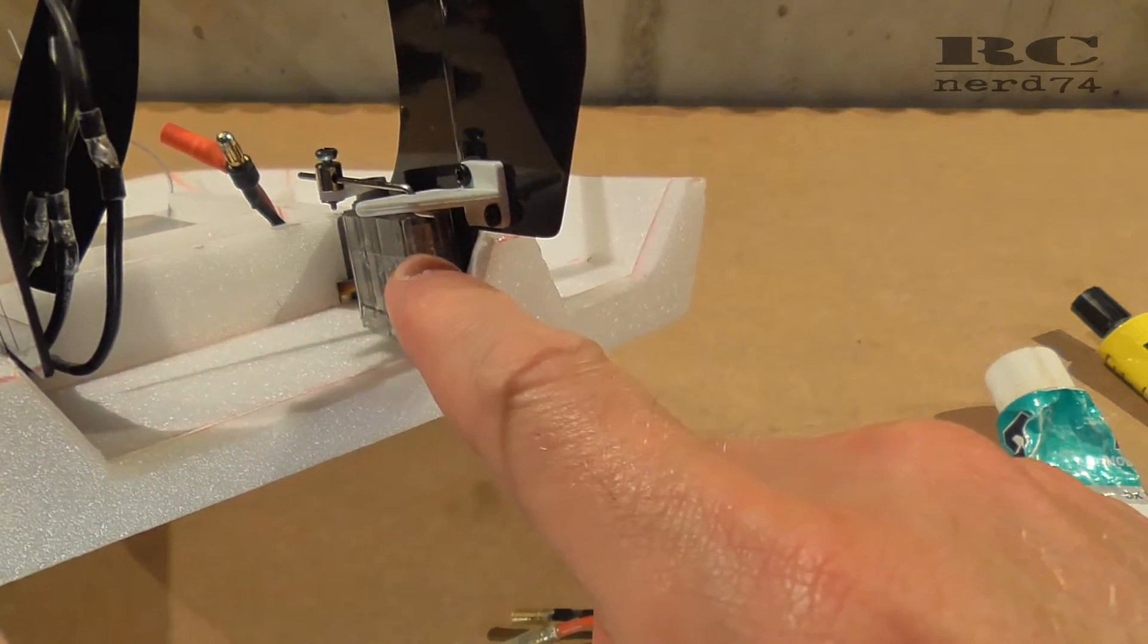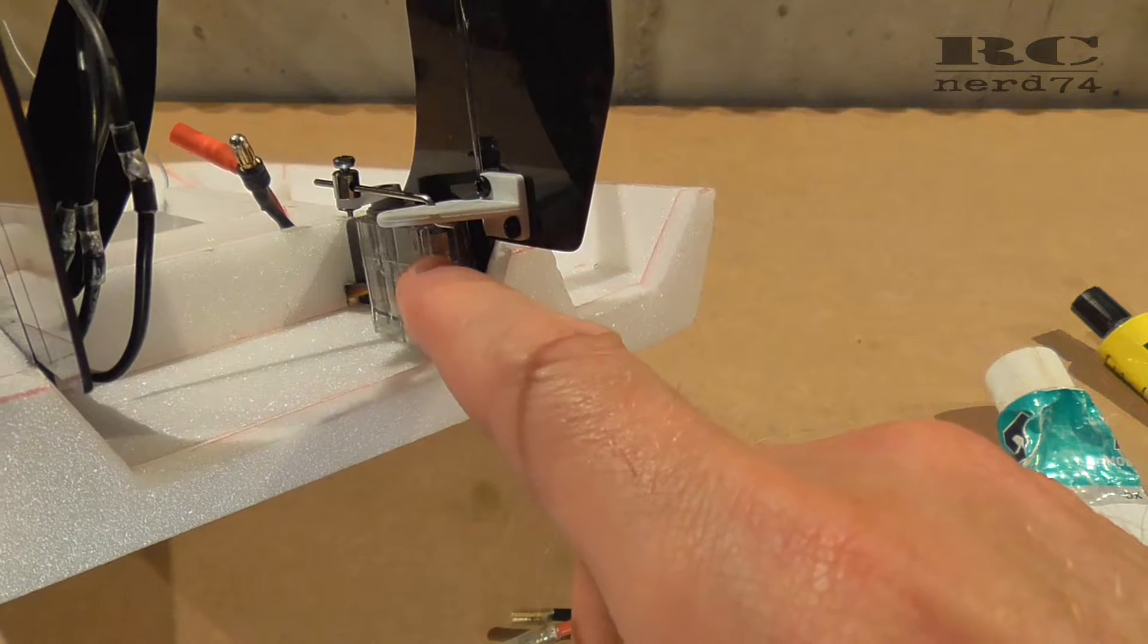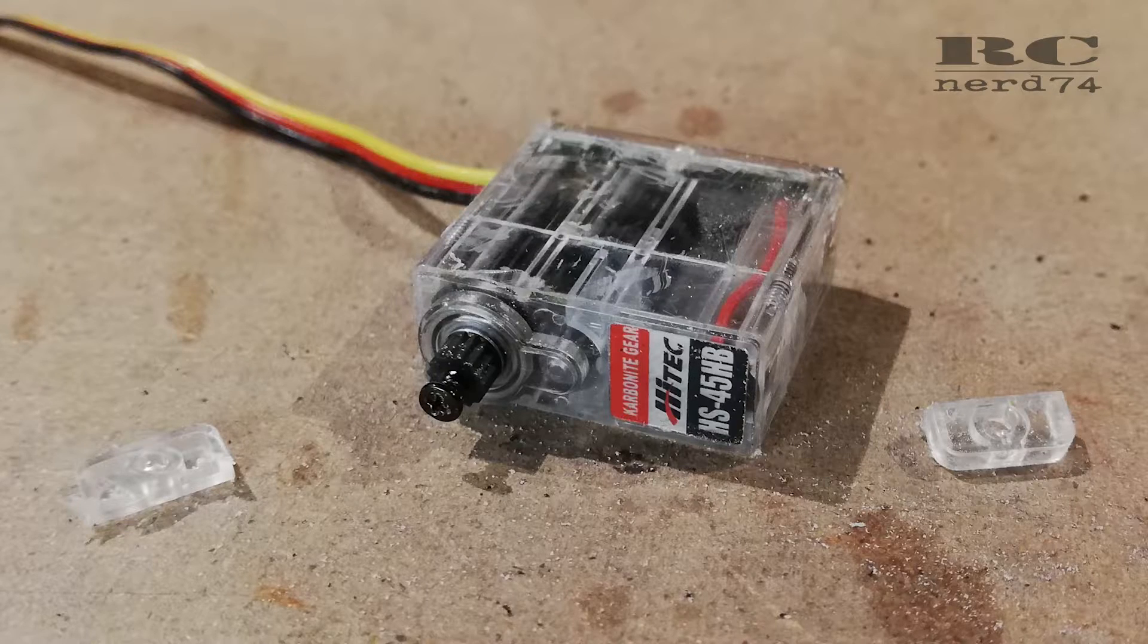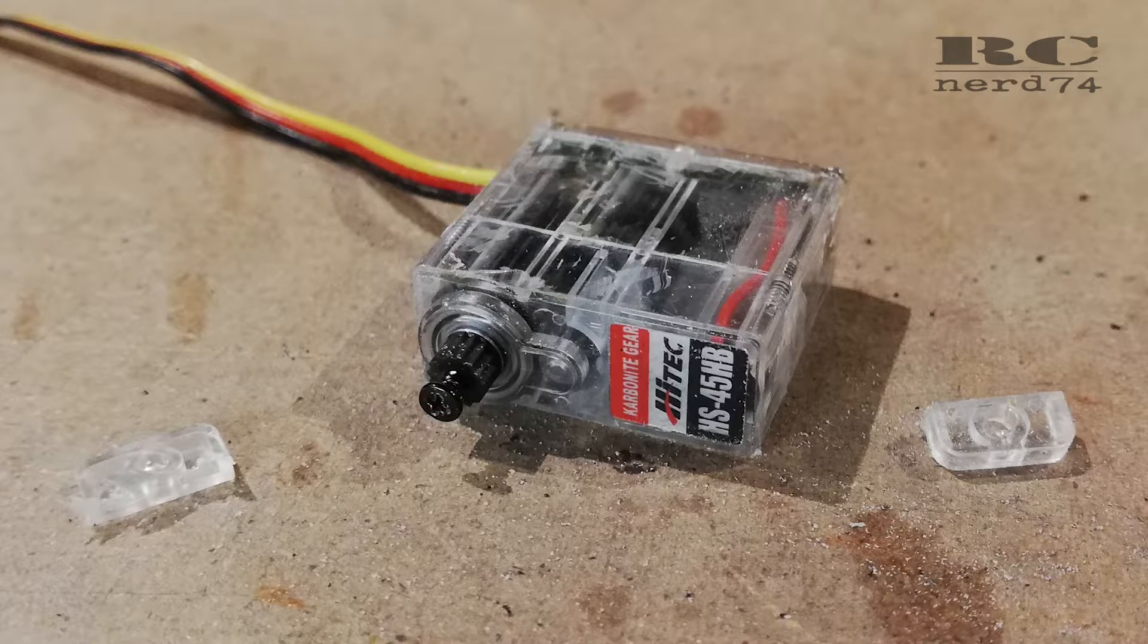For the modifications to make it waterproof I firstly cut out the mounting arms on both sides just to make the servo a little bit smaller and look cleaner.